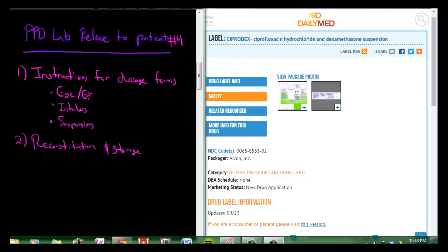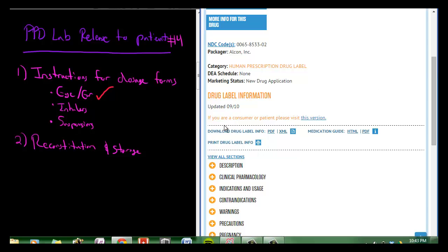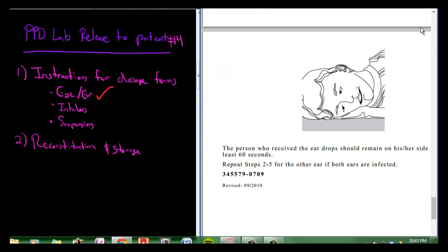First of all, let's go over ear and eye suspensions. I'll give you a specific example. If you were on DailyMed and a patient had a product, Ciprodex, you could go ahead and type it in and it will bring you to the specific NDC or manufacturer. DailyMed is really useful. It has a drug label or medication guide that you can download, and I'll show you what that looks like.